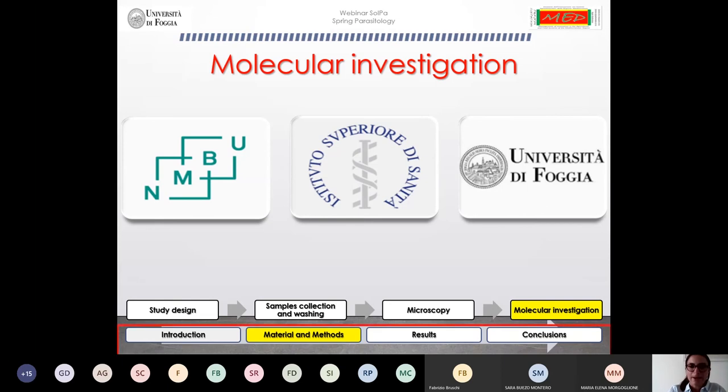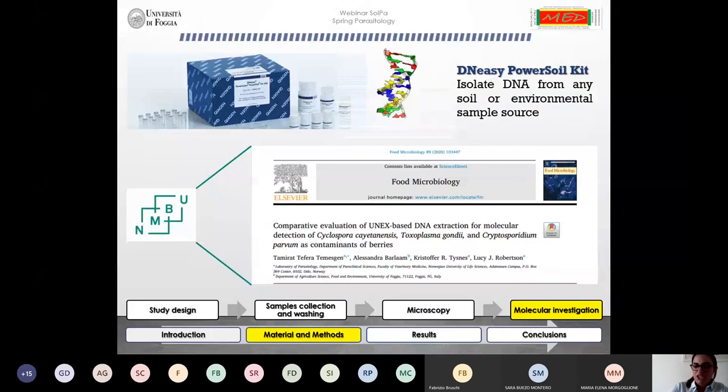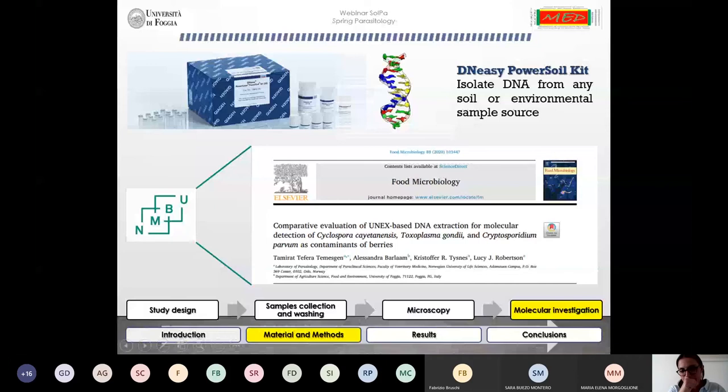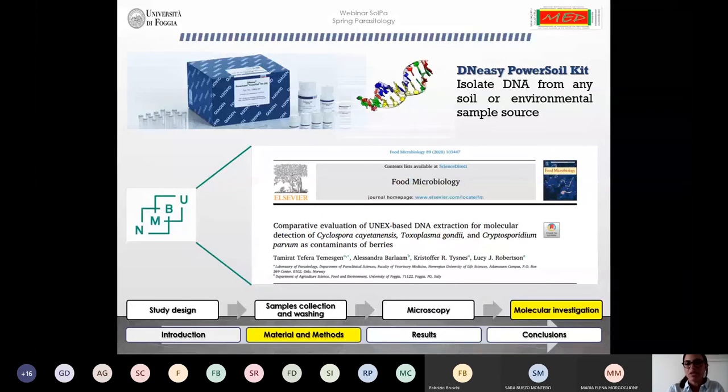The microscope investigation was followed by a molecular investigation carried out in collaboration with the Norwegian University of Life Sciences and Istituto Superiore di Sanità. The first step of the molecular investigation was the DNA extraction using the DNeasy PowerSoil Kit, which is ideal for isolating DNA from soil or environmental sample sources. During my stay at the Norwegian University, we carried out an additional research project in which we compared the DNeasy PowerSoil Kit to assess which one of the two was better for the molecular detection of protozoan parasites as contaminants of berries. The results have shown that the DNeasy PowerSoil Kit is the best for this purpose.